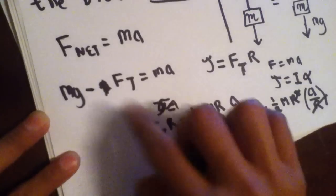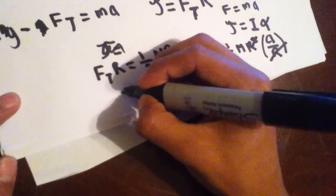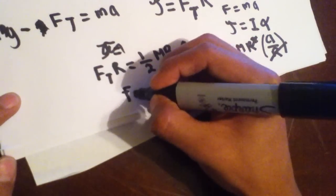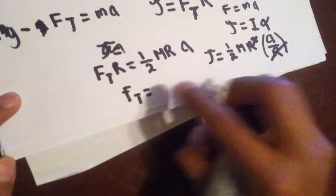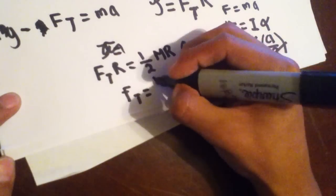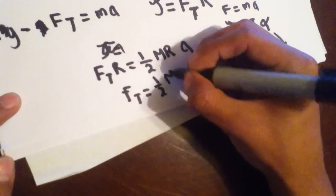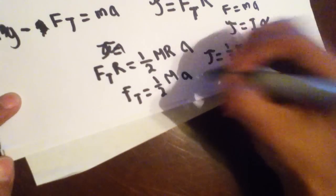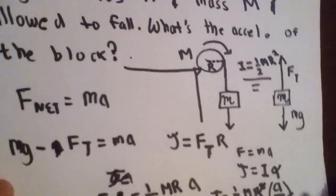And solve for FT, because we're going to want to plug it back to this equation. So then, that's going to give us FT equals. Now, if you divide this over here, the R's cancel. So, you're left with one-half M A.